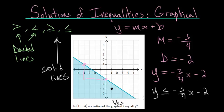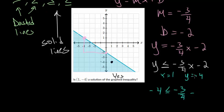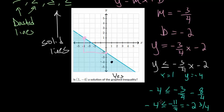Now numerically, or algebraically, we can plug it into this equation too and see if it's true. Since x is 1 and y is -4, we get that -4 ≤ 1 × (-¾), which is -¾ - 2. We can make that -8/4, so -4 ≤ -11/4. But 11/4 is really just 2¾, so we have -4 ≤ -2¾. And this is true — minus 4 is less than or equal to minus 2¾. So you can see it graphically that it's true — it's in that shaded blue region — and you can also see it algebraically.